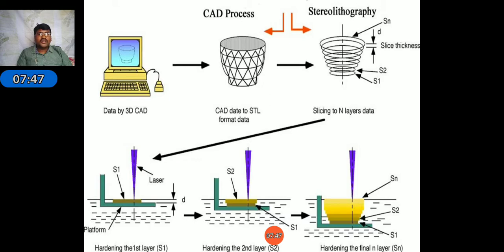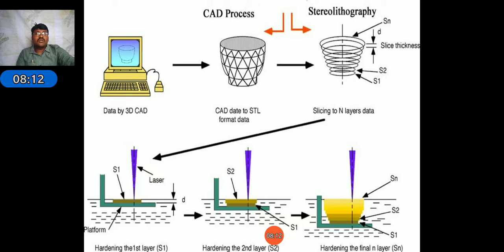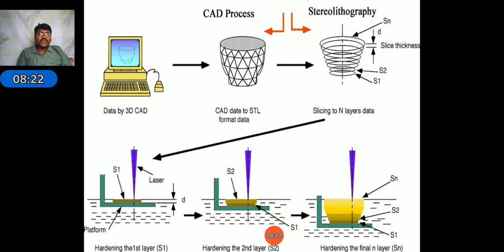UV rays from the laser, directed through the tunable mirror, deposit each layer on the pattern. After creation of the first layer (S1), the bottom board moves downward based on the layer thickness. Then the second layer is created. This process continues up to n layers, and by completing all layers, we get the required shape of the rapid prototype.